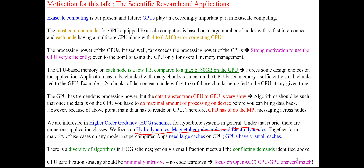We have a whole range of possible algorithms available in the package of higher-order Godunov schemes, but only a few of them meet all three requirements: using a very small amount of memory, having very efficient processing on the GPU once the data is there, and working within the confines of the GPU's small caches.